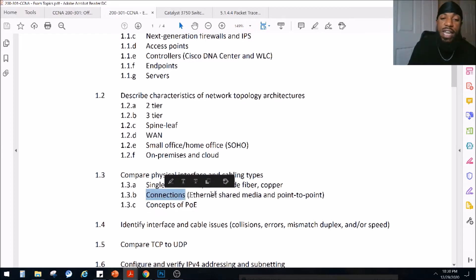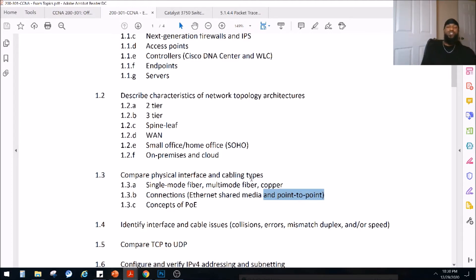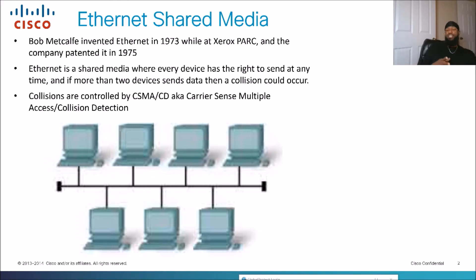So what are these connections — Ethernet shared media and point-to-point? We know Ethernet is a standard used in local area networks, but there are different types of technologies and ways Ethernet works. Ethernet was basically a technology designed by Robert Metcalfe, a computer engineer from Brooklyn. He invented Ethernet in 1973 while working at Xerox. They patented it in 1975 and it became an open standard in the early 80s. Today, Ethernet is pretty much the standard for local area networks.